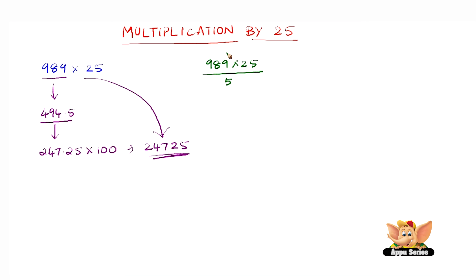5 times 9 is 45, that is 5, carry over 4. 5 times 8 is 40, 40 plus 4 is 44, carry over 4 again. 5 times 9 is 45, 45 plus 4 is 49. 2 times 9 is 18, that's 8, carry over 1.